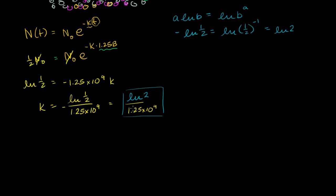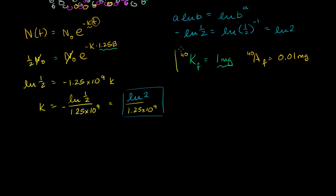Now that we've figured out k, let's think about a situation where we find in some sample: the potassium-40 found is 1 milligram — I'm just making up these numbers — and the argon-40 found is 0.01 milligrams. How can we use this information, derived from the half-life, to figure out how old this sample is?